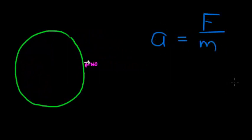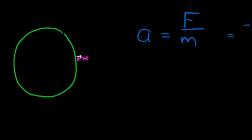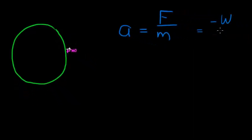Acceleration is equal to the force that's exerted—in this case, it's weight in the negative direction—divided by mass. Mass of what? Mass of the Earth, which is capital M.